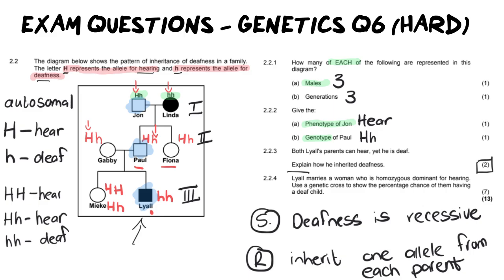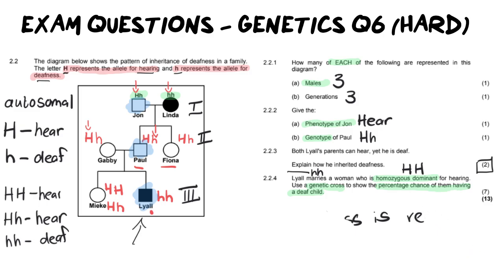Now the last question here says, Lyle marries a woman who is homozygous dominant for hearing. Use a genetic cross to show the percentage chance of them having a deaf child. Now before we do that genetic cross, we need to determine what this woman is. She is homozygous dominant and homo means the same, which means she's going to have two capital letter H's. We've established that Lyle is two small h's. Now before I even do the whole genetic cross, I have enough experience already to know what the answer is going to be.